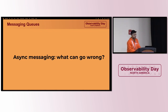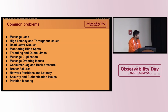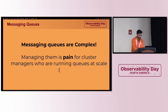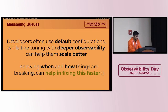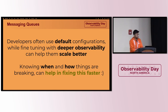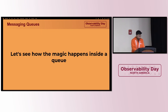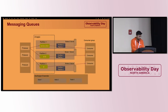Systems are inherently complex, and a lot of things can go wrong when you are running them — from message loss to partition loading, there are many key components to take care of. End users who are configuring the producers and consumers struggle with configurations, and cluster managers face different problems with observability when managing at scale.